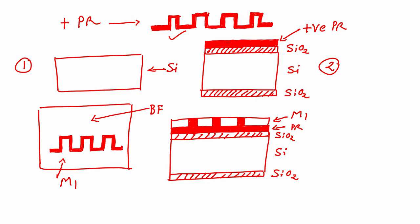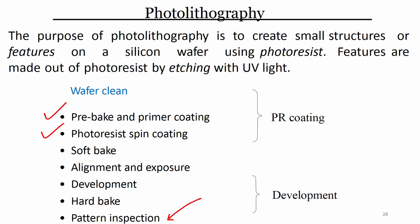After loading and aligning the bright field mask on the oxidized silicon wafer coated with photoresist, the next step is exposure using UV light. Steps completed: pre-bake, primer coating, photoresist spin coating, soft bake, alignment, and exposure.